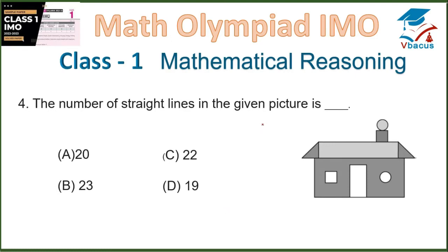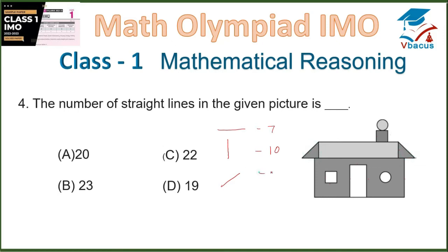Question 4: The number of straight lines in the given picture is? Straight lines are of 3 types: vertical, horizontal, and slanting. Counting vertical lines: 1, 2, 3, 4, 5, 6, 7 — vertical lines are 7. Counting horizontal lines: 1 through 10 — they are 10. Counting slanting lines: 1 and 2. So 10 plus 7 is 17, plus 2 is 19. So option D is correct.